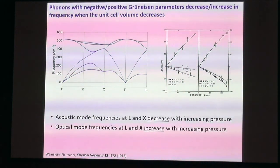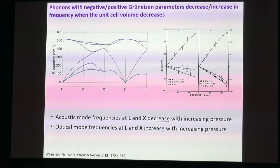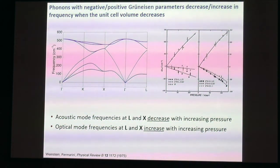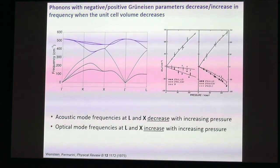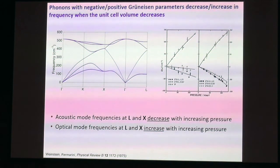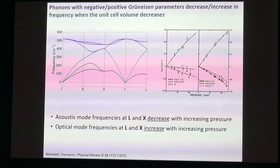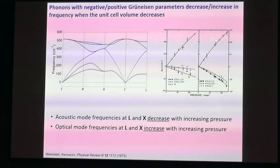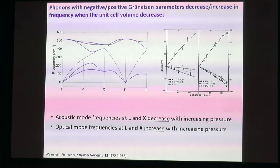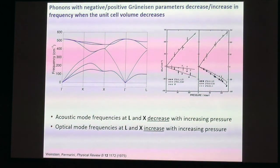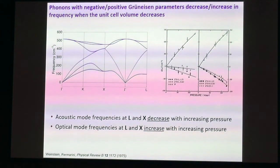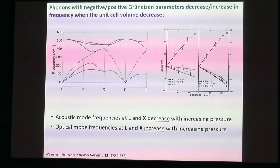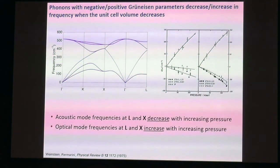The mode Gruneisen parameters can be positive or negative, but in order for a material to undergo negative thermal expansion, the bulk Gruneisen parameter has to be negative, because all of the other quantities in that expression have to be positive in a stable crystal. I wanted to use the example of silicon to show how phonon frequencies can change with pressure to give positive or negative Gruneisen parameters.